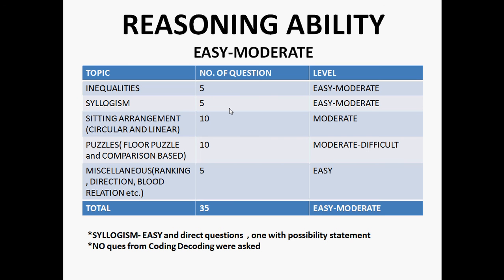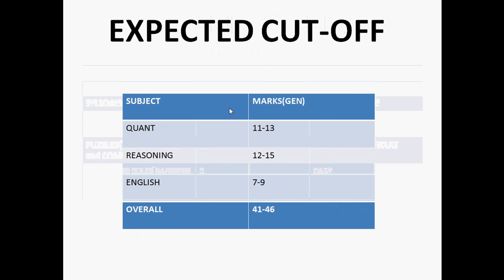So the expected cutoff is: in quant, 11 to 13 marks; in reasoning, 12 to 15; in English, around 7 to 9 or maybe less, maybe 6; and overall cutoff is around 41 to 46.